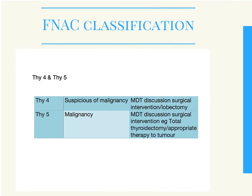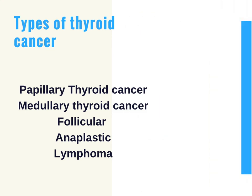Thy 4 is suspicious of malignancy but still not definitive. Usually the clinician will make a note of their suspicions, and additional follow-ups will be made — which may include a lobectomy of the thyroid gland to ascertain the tissue health. Thy 5 is a clear diagnosis of malignancy, which often indicates the following cancers: papillary thyroid cancer, which is by far the most common form of thyroid cancer, followed by medullary thyroid cancer, follicular, anaplastic, and lymphomas.